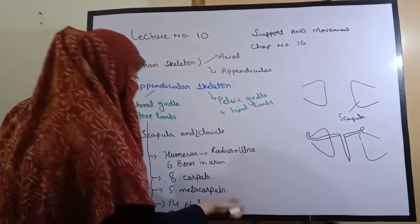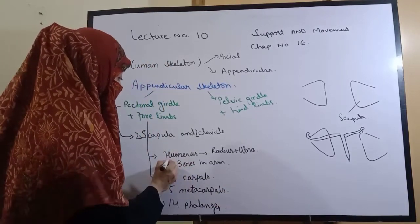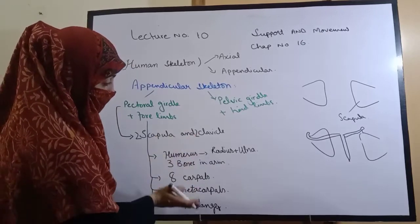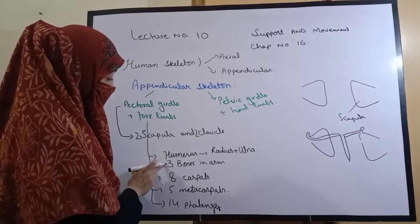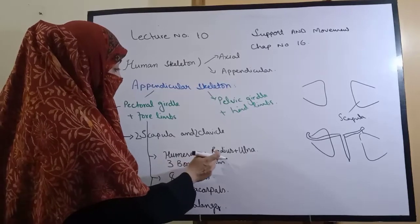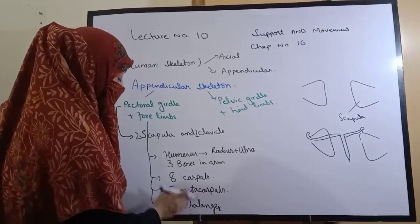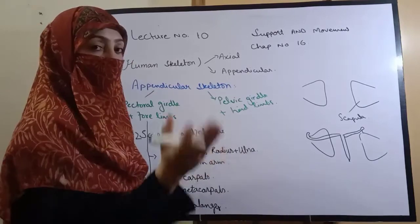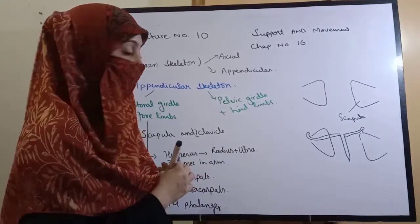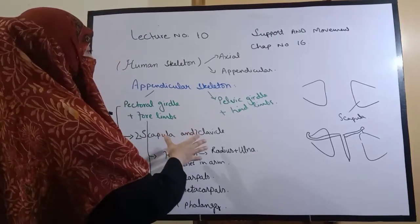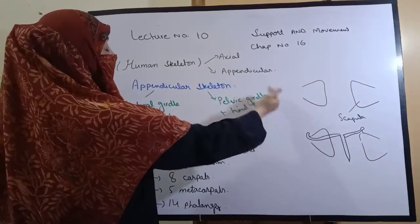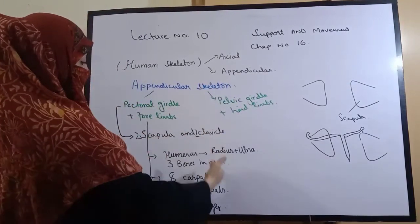All these bones together - if we talk about one arm, we have three bones in the arm: humerus, radius, and ulna. Then eight carpals, five metacarpals, and fourteen phalanges. We double them because we have two arms. Now we have another portion, the pelvic girdle. The pectoral girdle part is complete.